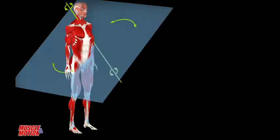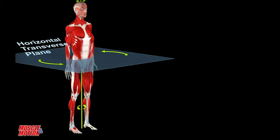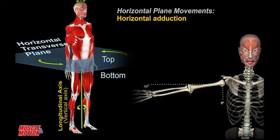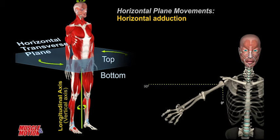The transverse or horizontal plane passes through the body in a line parallel to the floor, dividing the body into top and bottom parts. Transverse plane movements are twisting or rotational movements.